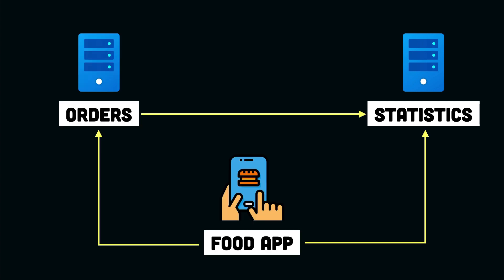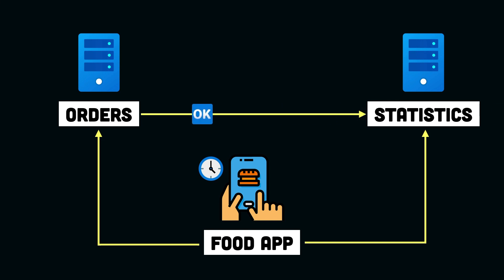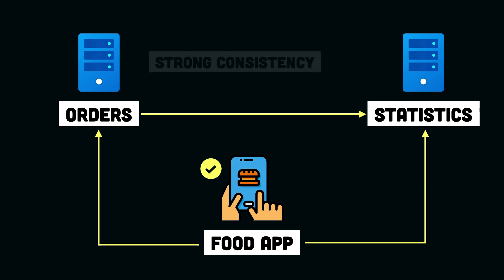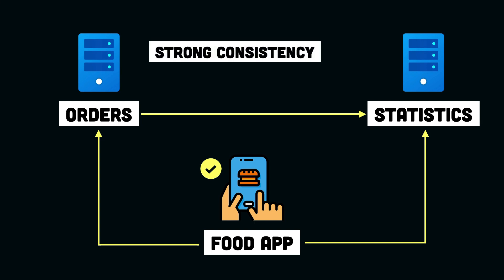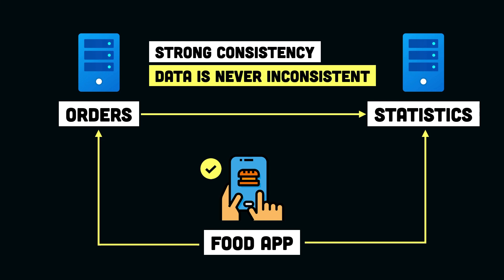On a high level, there are two different ways of achieving this consistency. The first would be to update the order count as soon as the user places a new order. So when the user places a new order, we create the order in the order service, and the order service then calls the stats service to update the order count. Once that is done, we send the response to the customer telling them the order has been placed. This way, whenever we have a new order, we keep updating the order count in the stats service, and the data will never be in an inconsistent state. Consistency achieved in this manner is called strong consistency, meaning the data is never inconsistent across any of the nodes of the distributed system.